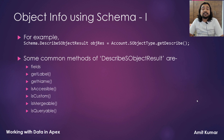Some common methods of the DescribeSObjectResult class include getLabel, getName, isAccessible, isCustom, isMergeable, and isQueryable. Fields is also a property of this class. So that's quite a bit of theory, and now it's time to see things practically.